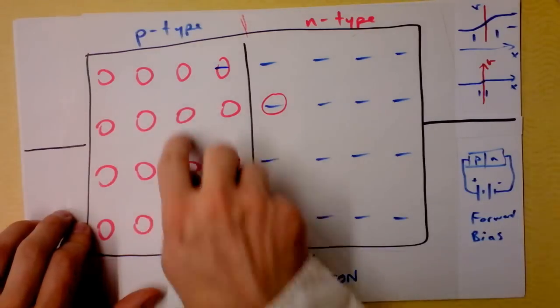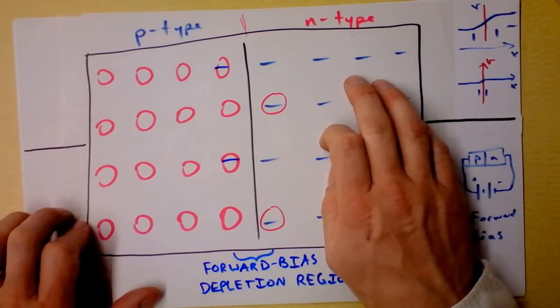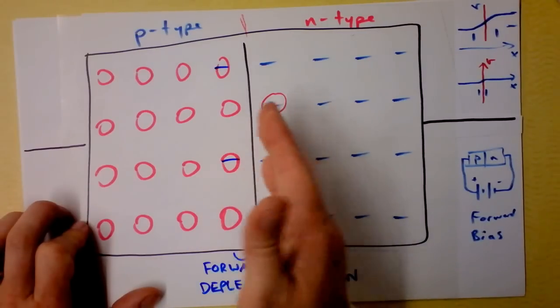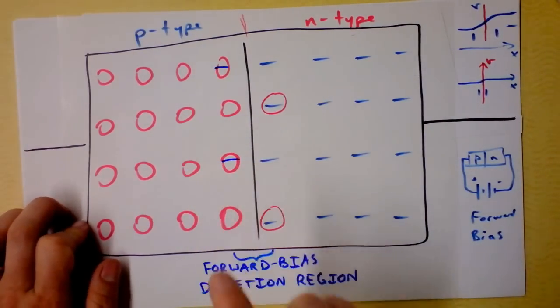Now over here, we've got free holes that can move and it can actually carry charge. And over here, we've got free electrons that can move and carry charge. Notice they can now communicate with each other because the depletion region is so small. And this sucker will conduct electricity.